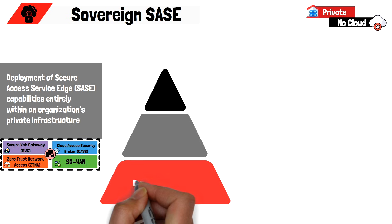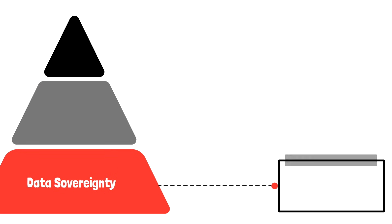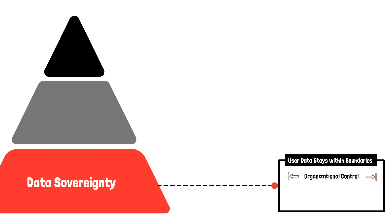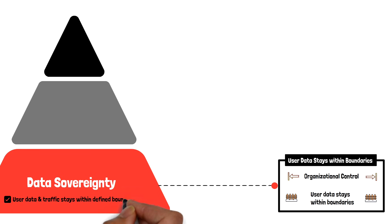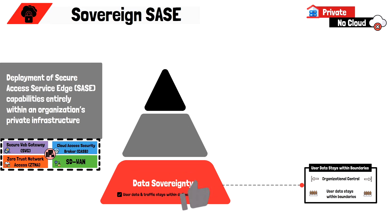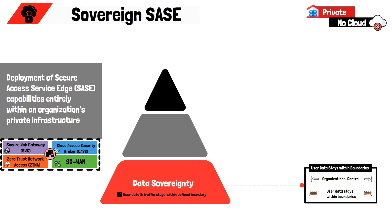The first foundational pillar is data sovereignty — the principle that user data must remain within clearly defined boundaries and under the organization's full control. This includes the ability to enforce data jurisdiction, meaning organizations should be able to specify exactly where the data resides and ensure that it never leaves a geographical or regulatory boundary. Any SASE solution that stores data outside those boundaries or outside the organization's direct control cannot be considered a true Sovereign SASE deployment.